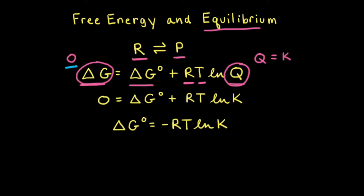So we can plug in zero for delta G in our equation, and we can plug in K for Q. That gives us zero is equal to delta G naught plus RT natural log of K. If we subtract RT natural log of K from both sides, we get delta G naught is equal to negative RT natural log of K.